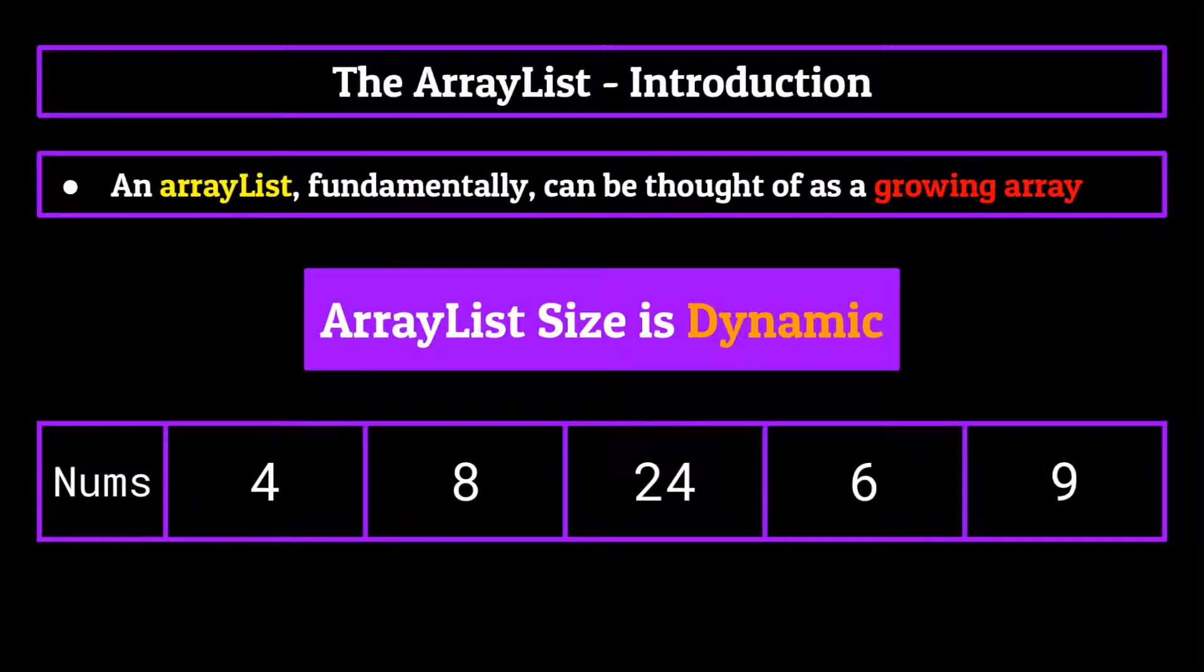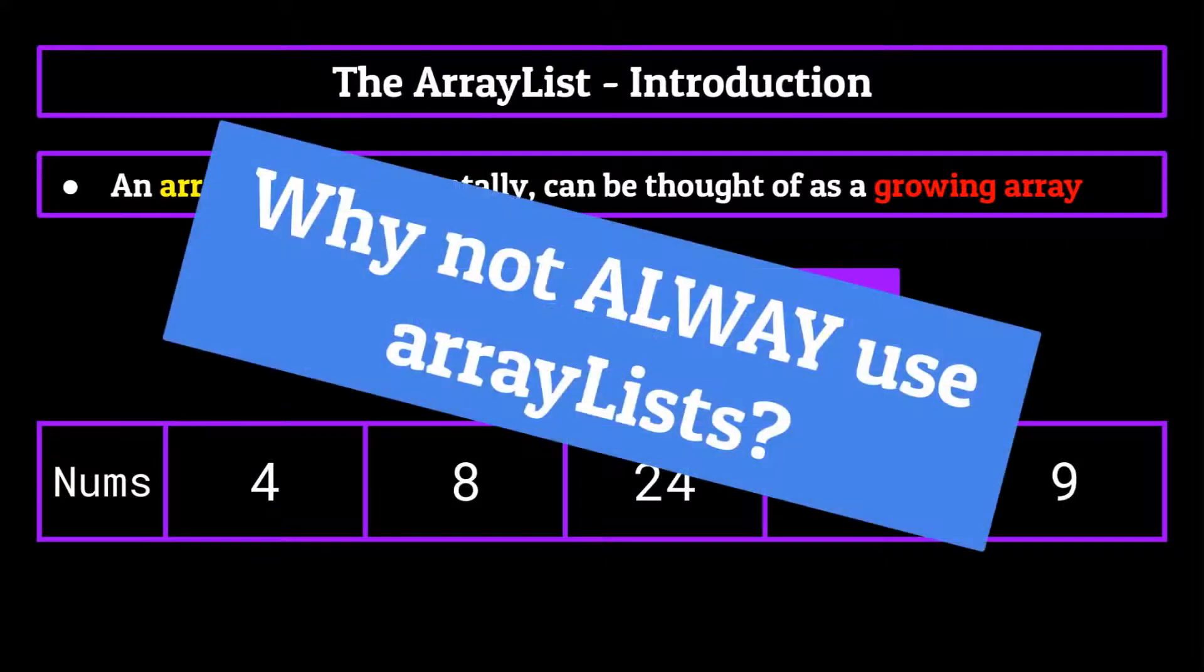As you can probably tell, this is extremely useful, which begs the question of why not just always use ArrayLists? I mean, in comparison, the array seems pretty trash. Well, that's definitely a valid question, and one which we will be getting to later in this segment. But before we can do that, we need to cover the basics of an ArrayList, including the properties and the methods associated with it.